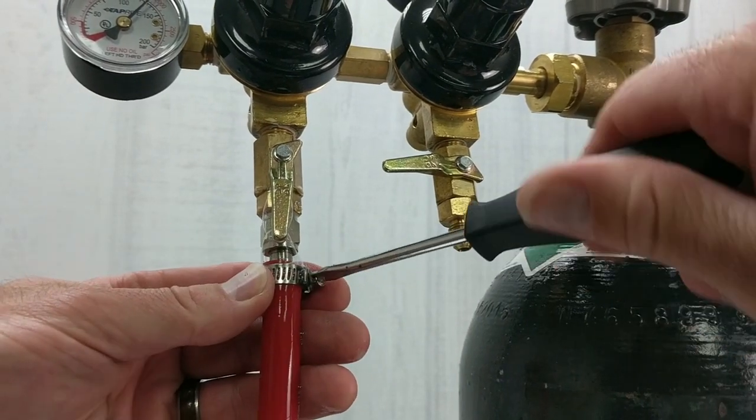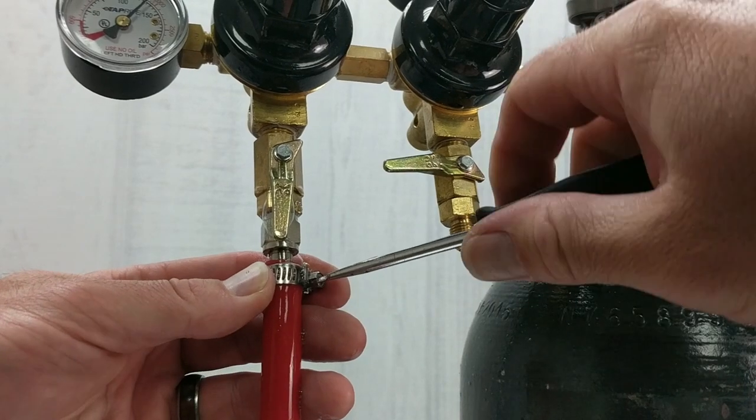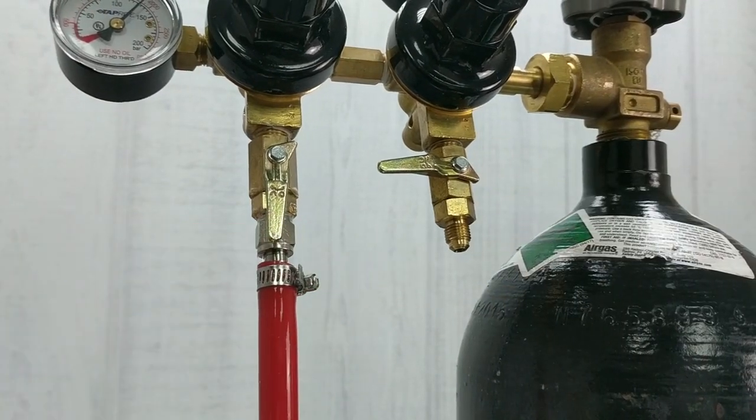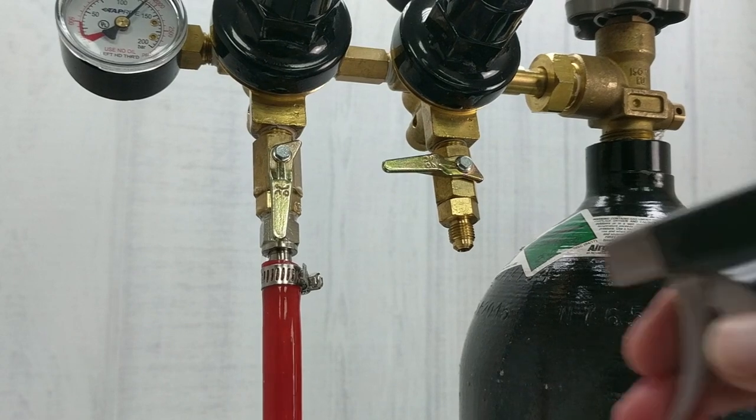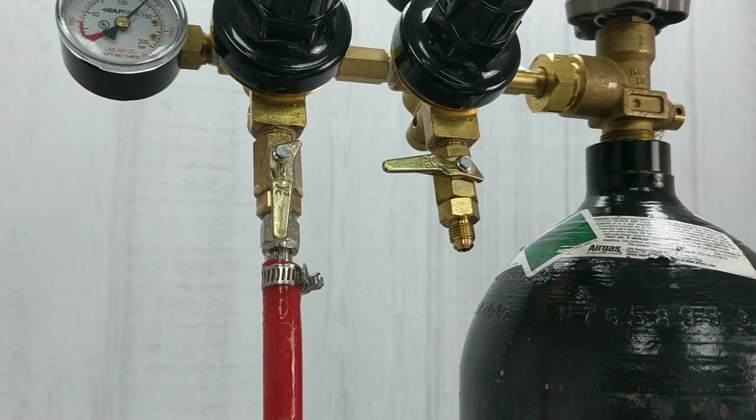All we need to do here is secure the worm clamp a little tighter using a flathead screwdriver. Then spray again to check for leaks. If you don't see any bubbles forming, you're good to go.